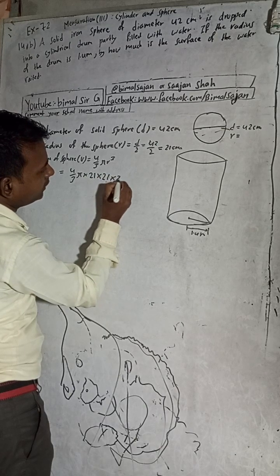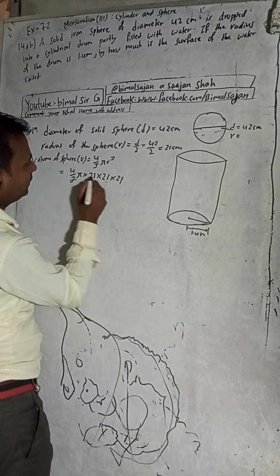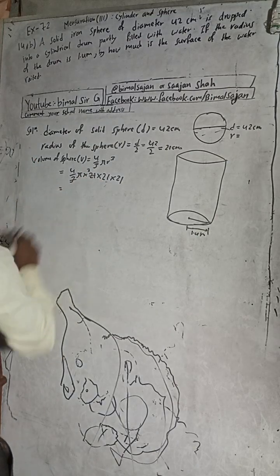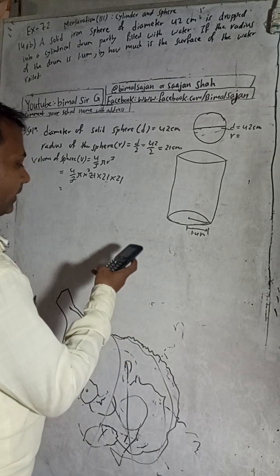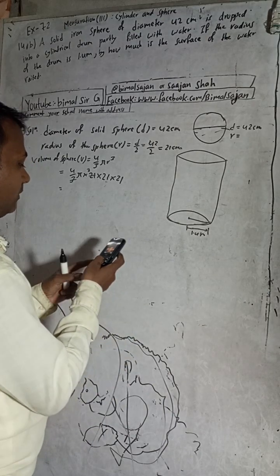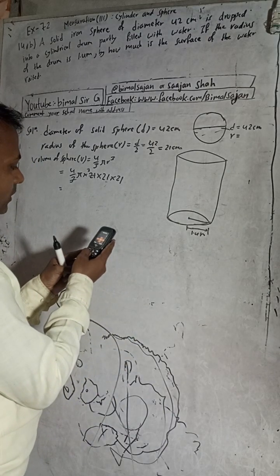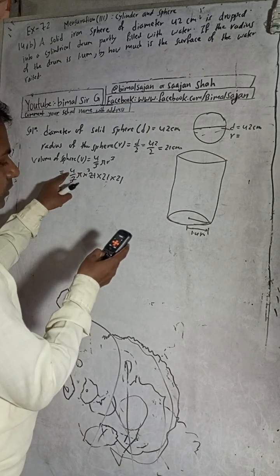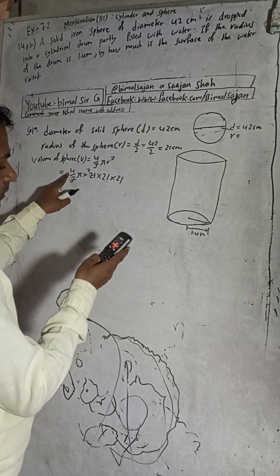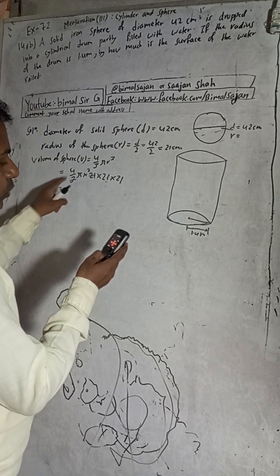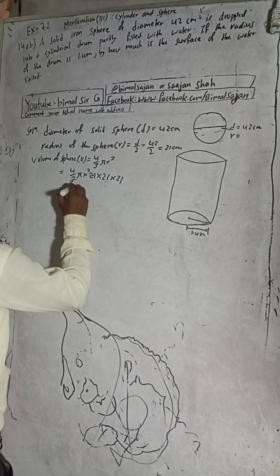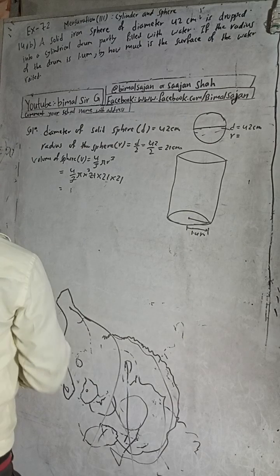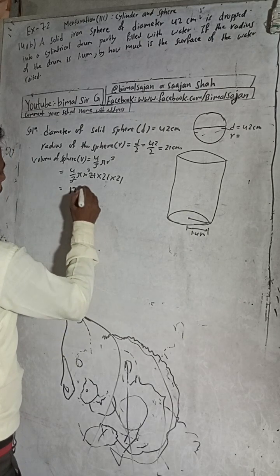21 cubed means 21 into 21 into 21. Now this is 3 sevens — 21. When you multiply: 21 into 21 into 21 into 7 by 28 into 28 gives us 12,348.